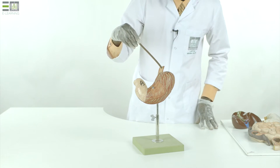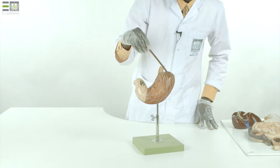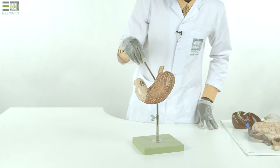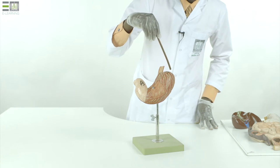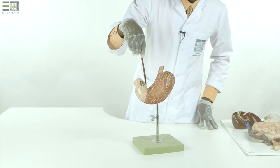The stomach has two ends, upper end and lower end, and it has two surfaces, anterior surface and posterior surface, and it has two borders, right border called greater curvature, and left border called lesser curvature.